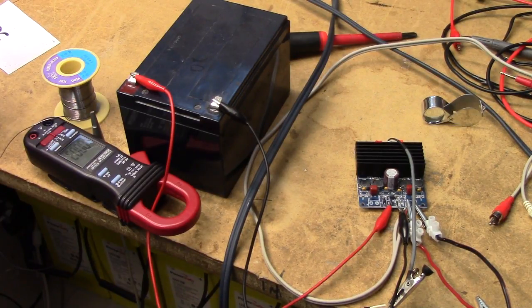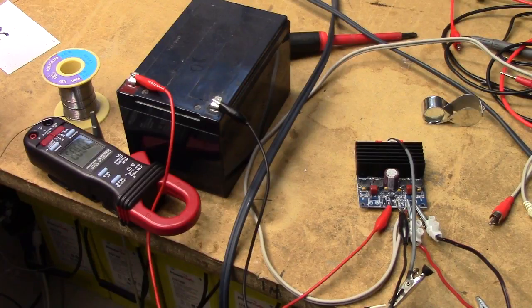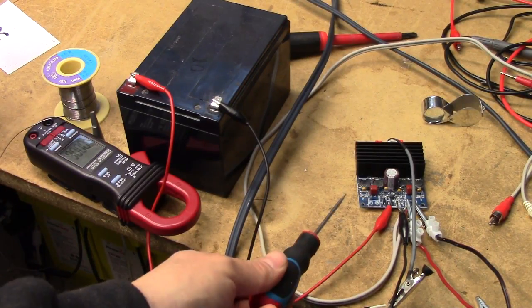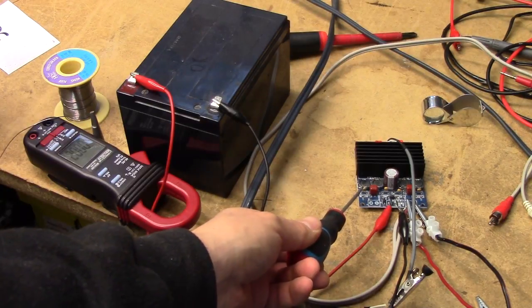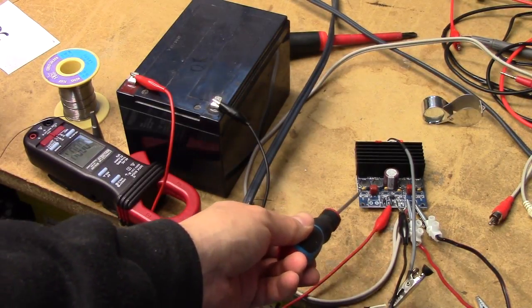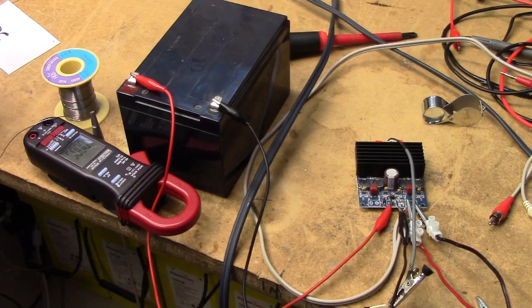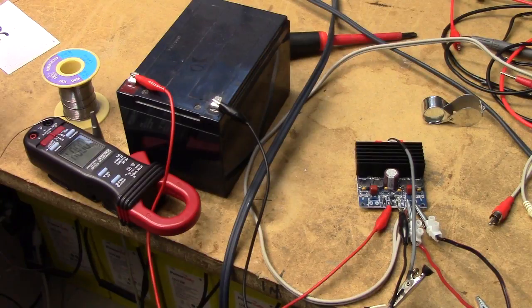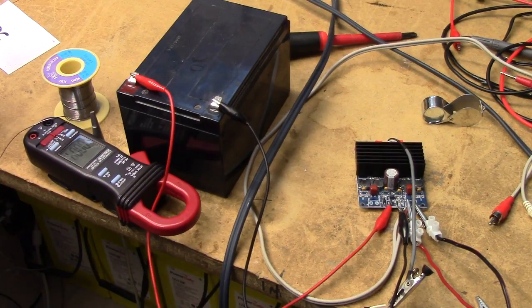If you haven't watched my review of it, I essentially ragged on it quite a bit for having a pretty bad output filter, and I upgraded the filter by replacing a few capacitors, namely these with 100 nF capacitors from whatever was originally there. I redid the solder joints and it started working relatively well.